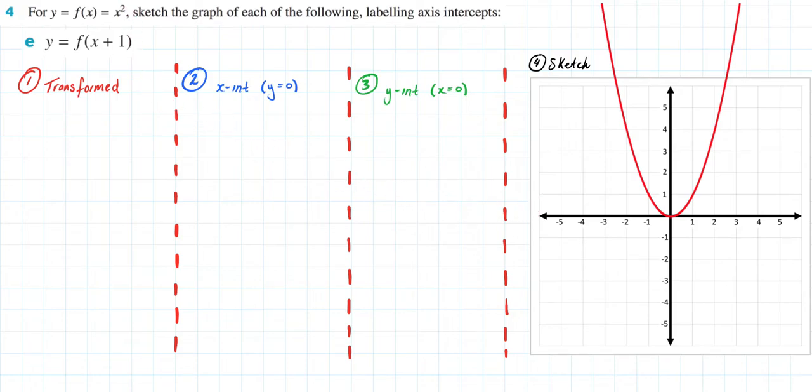We are doing exercise 7a and in this video I'll be answering question 4e which says for y equals f of x equals x squared, sketch the graph of each of the following, labeling axis intercepts.